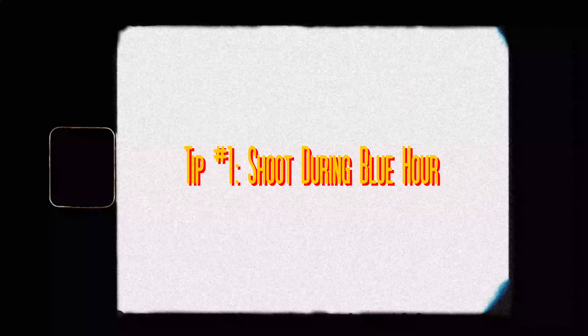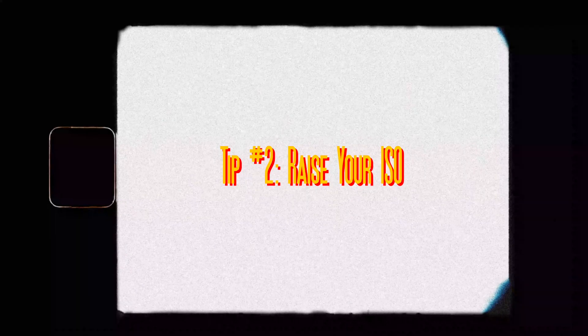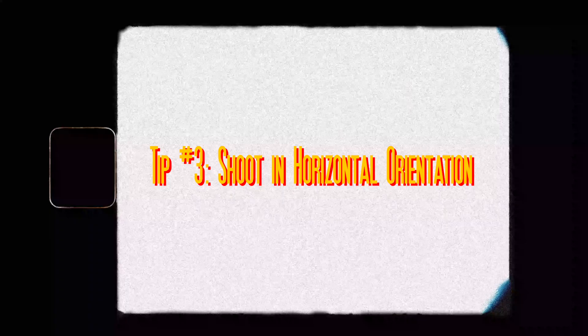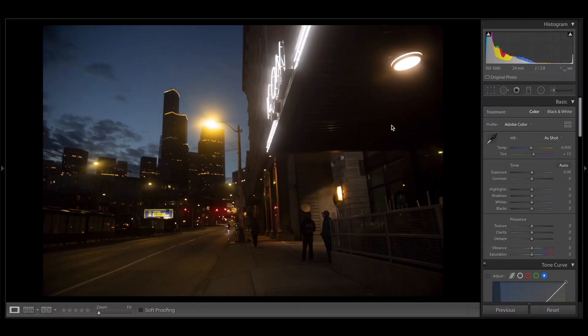The first tip is taking photos during blue hour so you get that contrast between blue and the warm colors — the reds and oranges — so your photos get that nice film cinematic look. The second tip is to not be afraid to bump up your ISO so you get that nice crunchy cinematic film look. The third tip is to not only shoot in portrait mode but also shoot horizontal, so you can get that cinematic look when you crop to a 16 by 9 ratio in Lightroom.